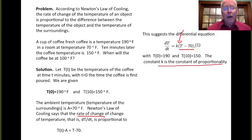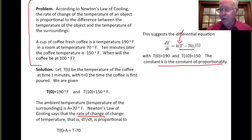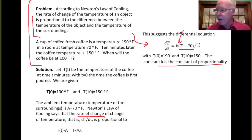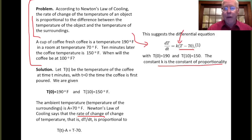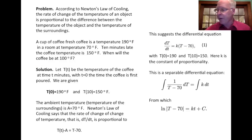The important point of this example is how we go from a written description of a physical situation and a little bit of knowledge about how temperature changes, and from that write down a differential equation that governs our situation. We're now going to solve this system and answer the question: at what time will the coffee be at 100 degrees Fahrenheit?